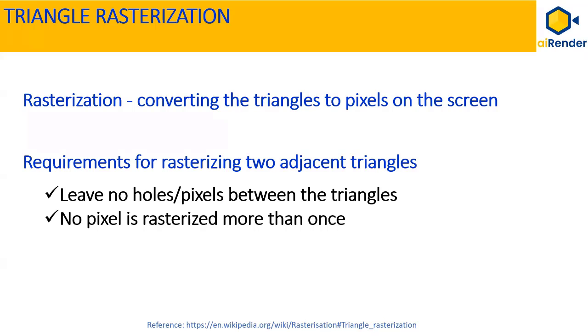The basic requirements for rasterizing two adjacent triangles, that's triangles that share a common edge, involves: number one, it should not leave any holes, that's non-rasterized pixels, between the two adjacent triangles, so that the rasterized area is completely filled. Number two, no pixel is rasterized more than once, that is, the rasterized triangles should not overlap.